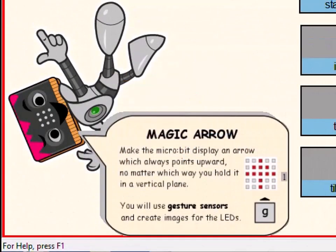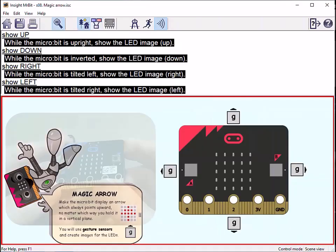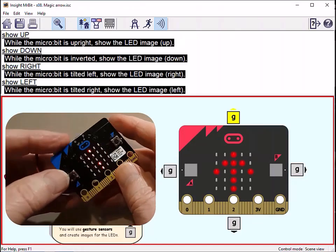Now an example of a program which detects the angle of the microbit. Here, the input comes from the microbit's internal accelerometer. The program shows a different image for each of four angle positions.